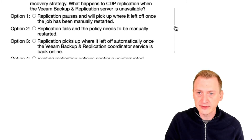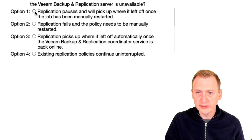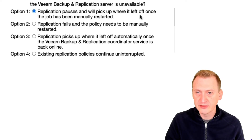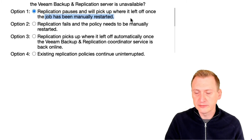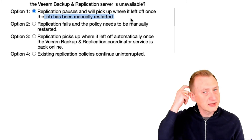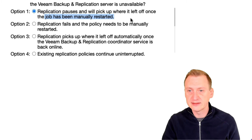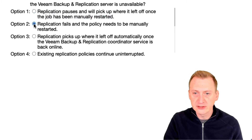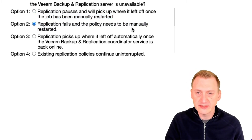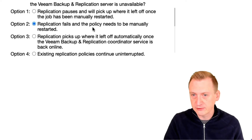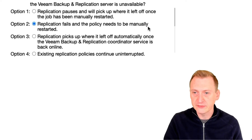Let's see what options we have. Option one: replication pauses and will pick up where it left off. No, because first of all, it's not a job — there's no job that needs to be manually restarted. It's a policy. Option two: replication fails and the policy needs to be manually restarted. No, there's actually no stopping of the policies like that. So that's also wrong.